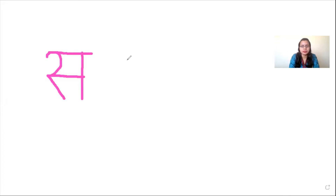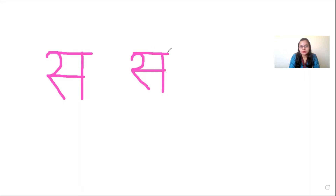Let me write once again. See carefully: write letter ra, leave some space, standing line, join them, and then cover it. The letter is sa. So you know now how to write the letter.